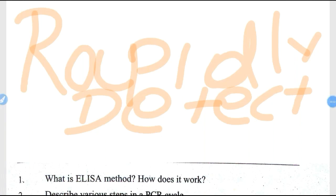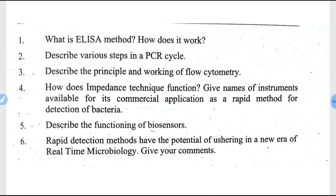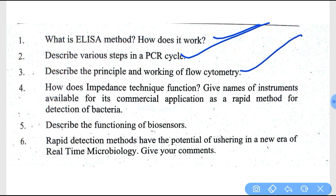In this video, we will understand about rapid detection technology and we will answer these questions: What is ELISA method and how does it work? Describe various steps in a PCR cycle. Describe the principle and working of flow cytometry. How does the impedance technique function, and give names of instruments available for its commercial application as a rapid method for detection of bacteria? Describe the functioning of biosensors and comment on how rapid detection methods have the potential of ushering in a new era of real-time microbiology.